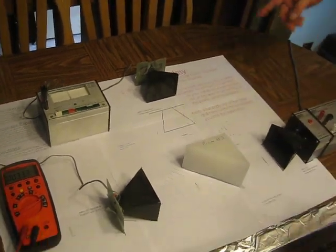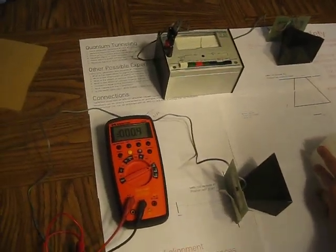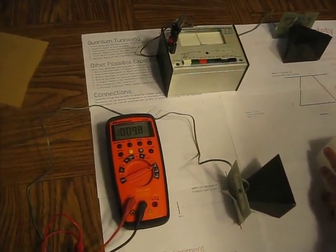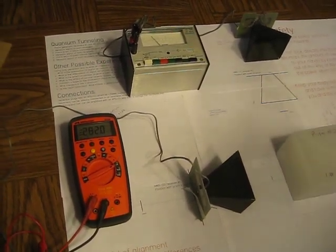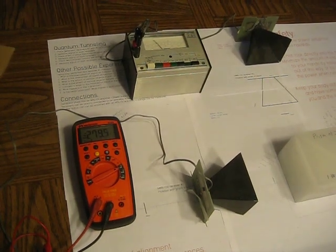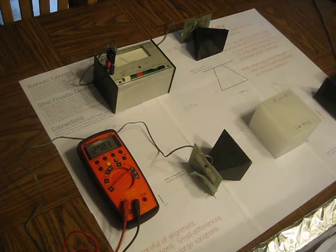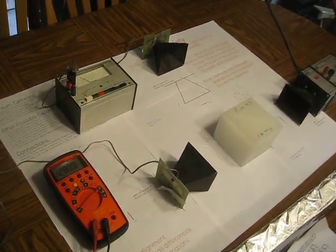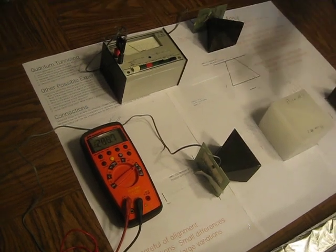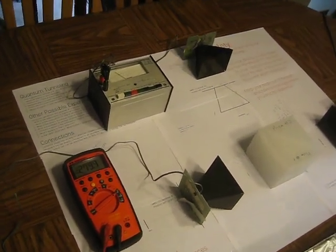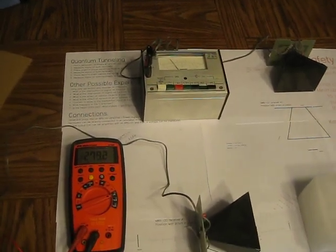Now, the weird thing about quantum tunneling is we can place a second prism behind the first prism, not touching the first prism, not touching the path, and now the microwaves go straight again to receiver number one. And that has a reading of 280 microamps. And the one off to the side, 90 degrees, is at roughly 1.3.